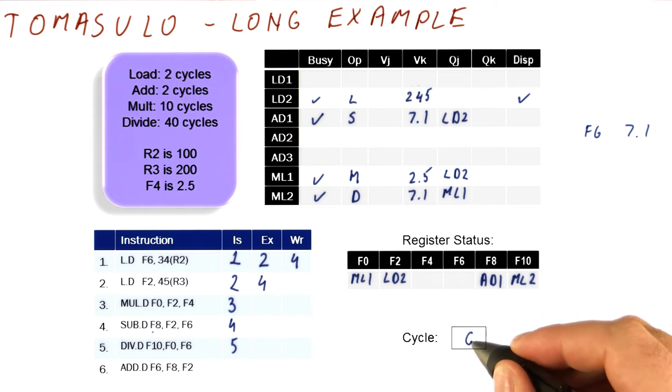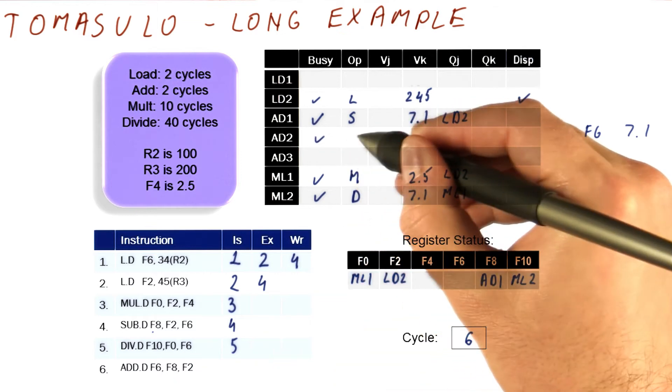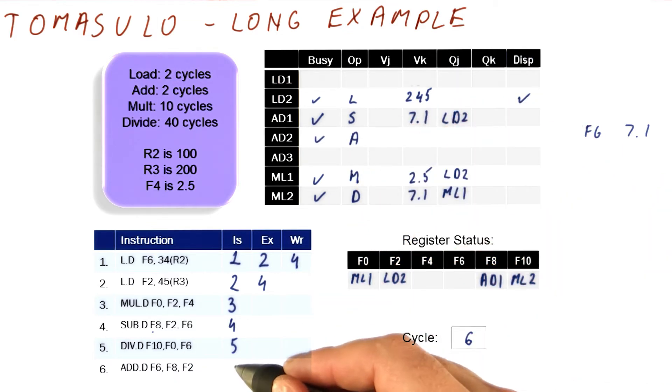Now let's look at cycle six. In cycle six, we're going to try to dispatch this add. There is a unit available, so we will succeed in dispatching it.